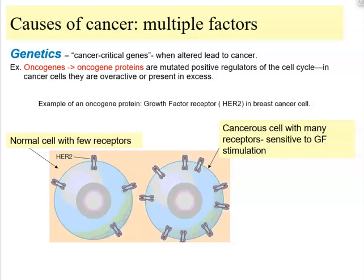An example of an oncogene product is a growth factor receptor protein in the membrane of breast cancer cells, called HER2. Normal cells would have a few receptors and receive specific growth factor signals. But cancerous cells express many more HER2 receptors, making them very sensitive to growth factors. Therefore, they respond strongly to growth factors, initiate division, and the cancerous cell begins dividing uncontrollably, forming a tumor.